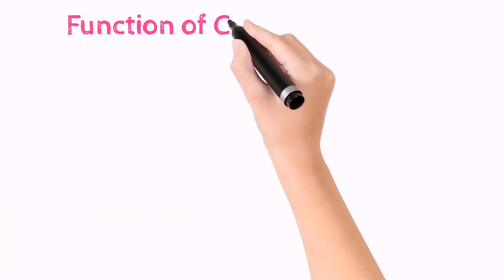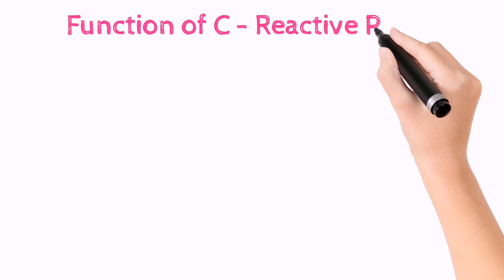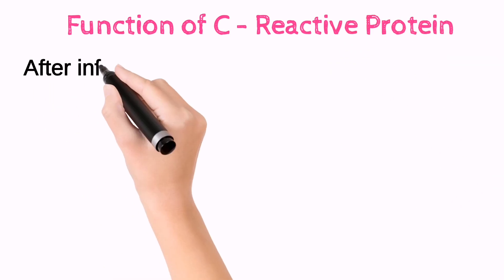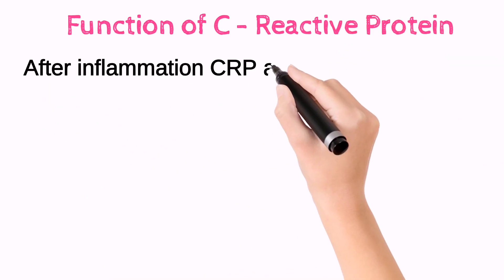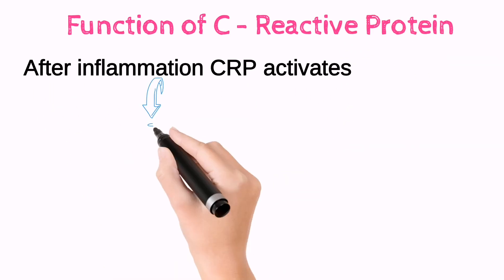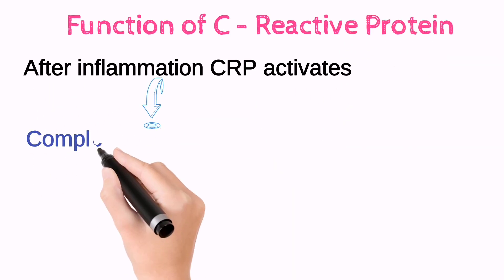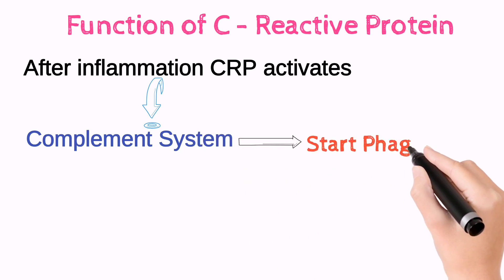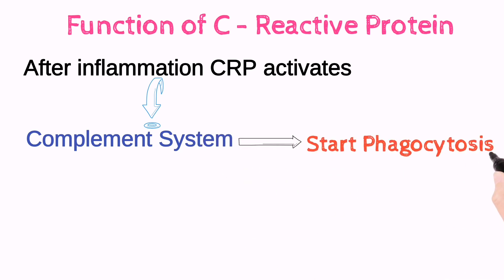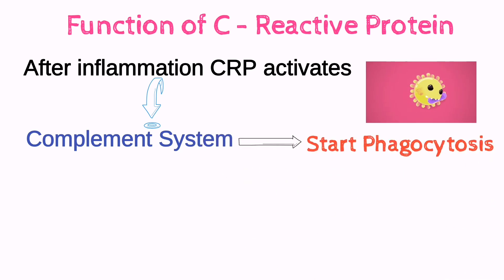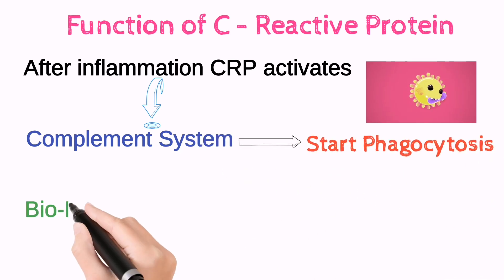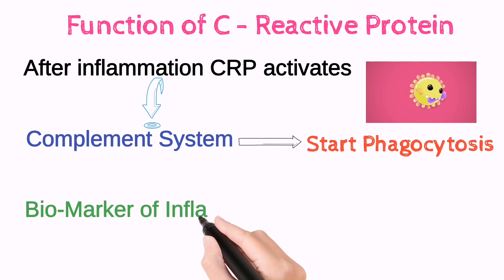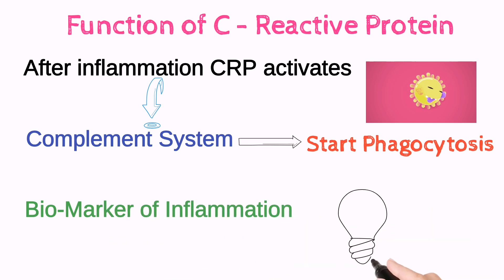If we talk about the function of C-Reactive Protein, so majorly after inflammation, C-Reactive Protein activates the complement system of the body, which in turn starts phagocytosis. C-Reactive Protein works as a biomarker of inflammation.